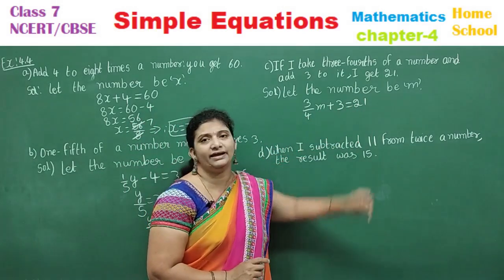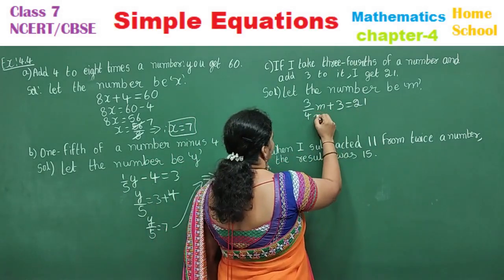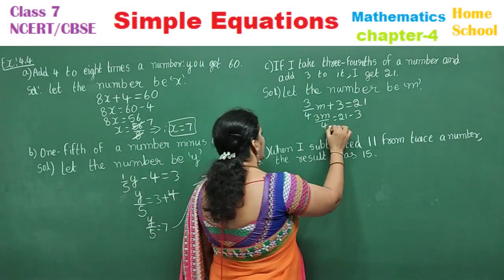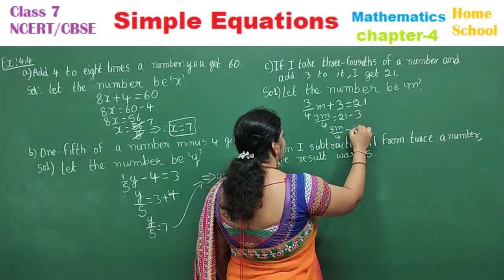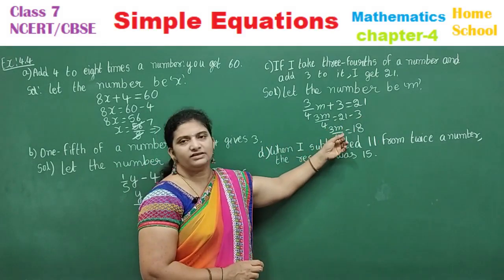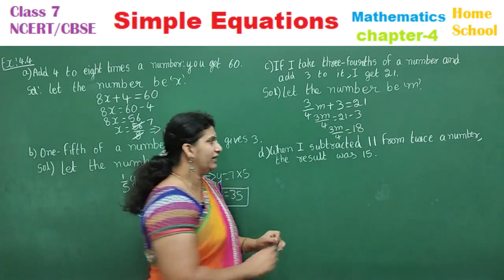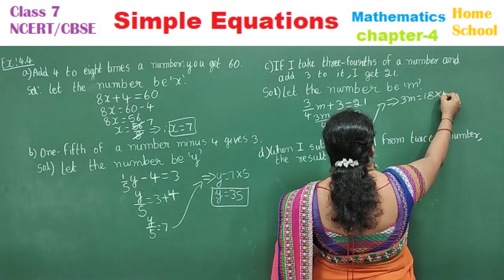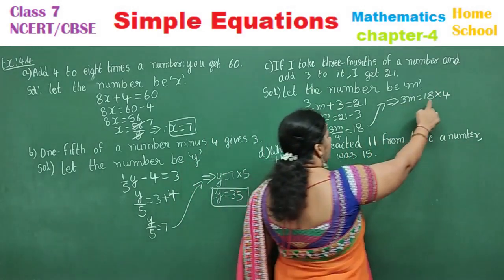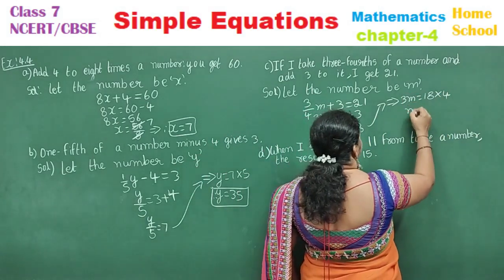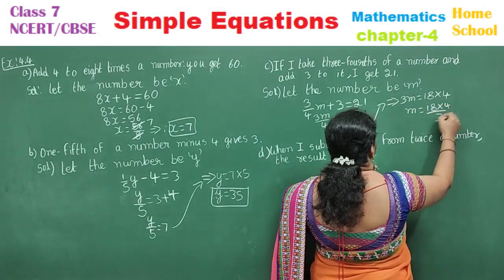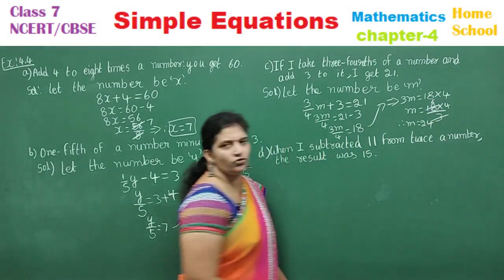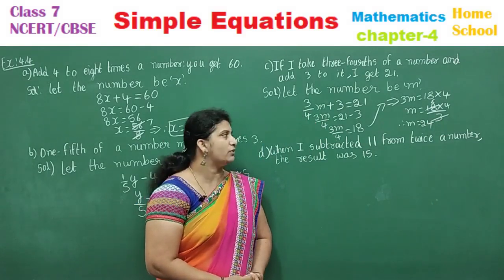Three-fourths of M plus 3 equals 21. Transpose plus 3 to the other side: 3M/4 = 21 − 3 = 18. Send the 4 to the other side as multiplication, then divide by 3: M = 18 × 4 ÷ 3. Since 3 × 6 = 18, M = 6 × 4 = 24. Therefore the number M is 24.